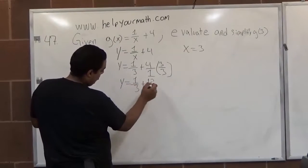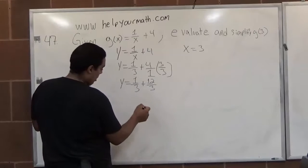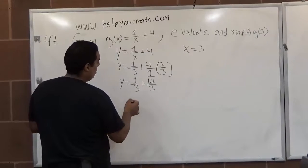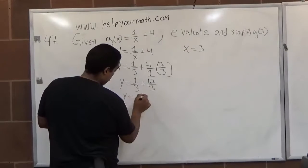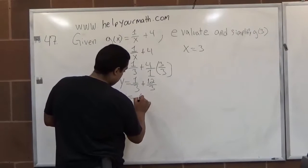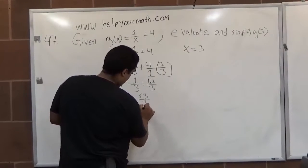And so now that we have like terms on our denominators, we can add the two together. So y = 13/3.